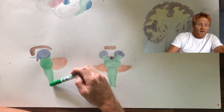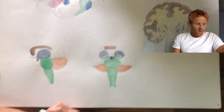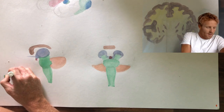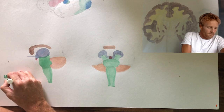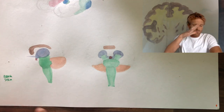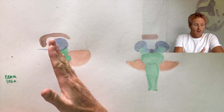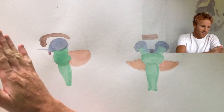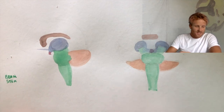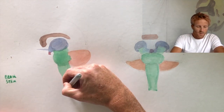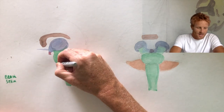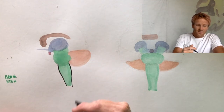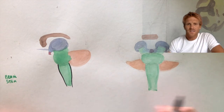Everything drawn here in green is part of the brain stem. In this lateral view of the brain, the front is the anterior part and the back is the posterior part. The spinal cord enters the base of the skull and forms a little bulge — that first bulge is the first part of the brain stem, called the medulla.